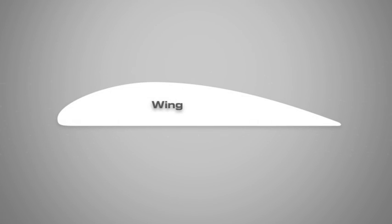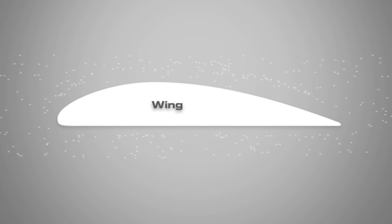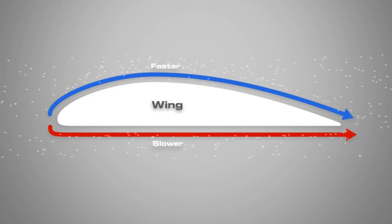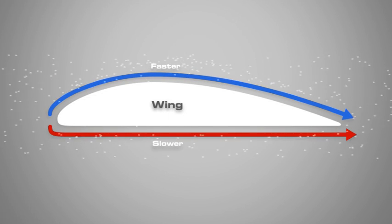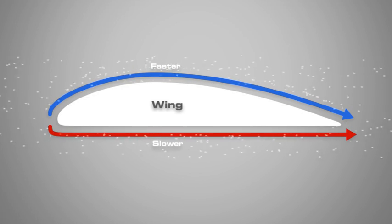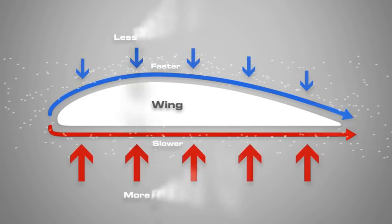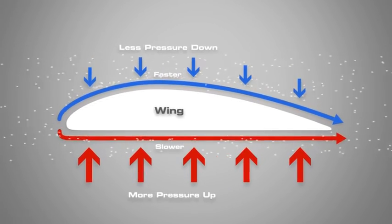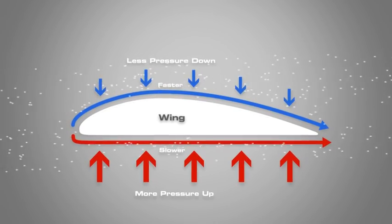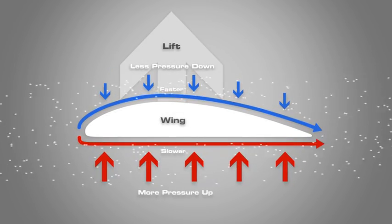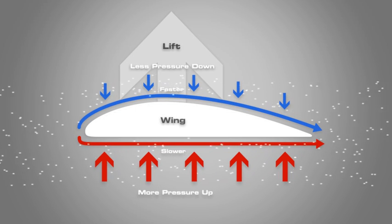A wing is curved on the top and flat on the bottom. So, when a wing moves through the air, the air on top of the wing has to travel faster than the air under the wing. Because the wing is curved on the top, the air moving over the top must travel further and faster than the air under the wing to get to the same place. This causes a decrease in the pressure on the top of the wing. The pressure difference from the top and bottom of the wing causes a vacuum effect, and the wing is pulled upward in lift. That is to say, the difference in pressure between the upper and lower surfaces results in lift.